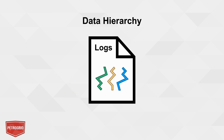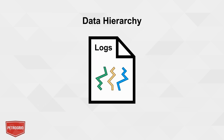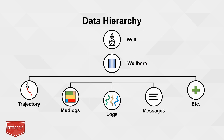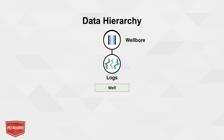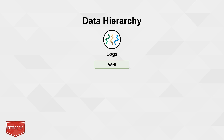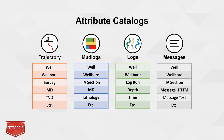Each WitsML document includes in its structure the parent well and wellbore name with their respective unique identifiers. We can leverage this feature of the WitsML standard using Petrogrid's PGXML, which includes these attributes in its automatic processing of WitsML documents. In addition to supporting a well hierarchy, PGXML also includes all the other WitsML attributes per WitsML object type.